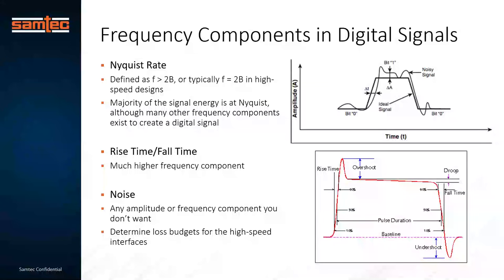One of the terms I was reintroduced to here at Samtech is Nyquist rate or Nyquist frequency — I had kind of forgotten about that from my undergrad years. The Nyquist rate is defined as the frequency that's twice the bandwidth, and in high-speed designs the majority of the signal energy is at Nyquist, although many other frequency components exist to create a digital signal.